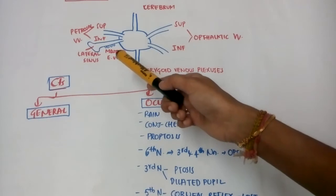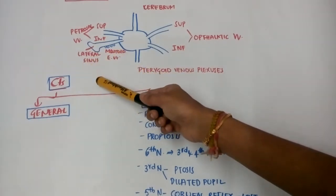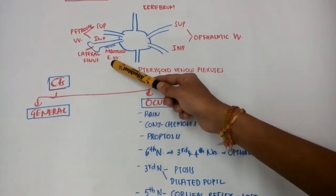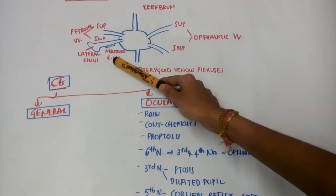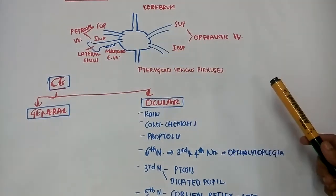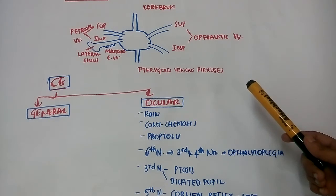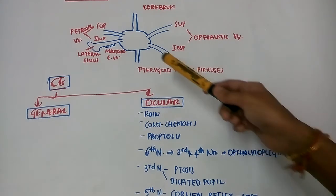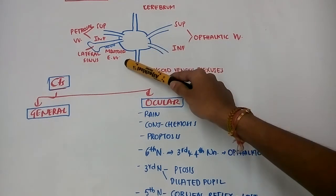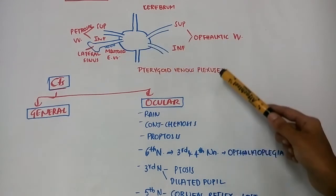...the petrous vein which drains into the lateral sinus. It has communications with mastoid emissary vein and labyrinthine veins, so infection may spread from the middle ear and along the mastoid emissary vein from the mastoid air cells.